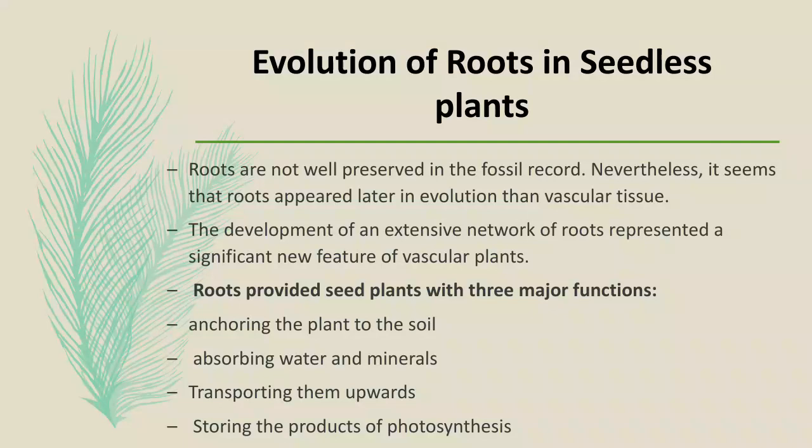Evolution of roots in seedless plants: roots are not well preserved in the fossil record. Nevertheless, it seems that roots appeared later in evolution than vascular tissues. The development of an extensive network of roots represented a significant new feature of vascular plants. Roots provided plants with three major functions: anchoring the plant to the soil, absorbing water and minerals and transporting them upwards, and storing the products of photosynthesis.